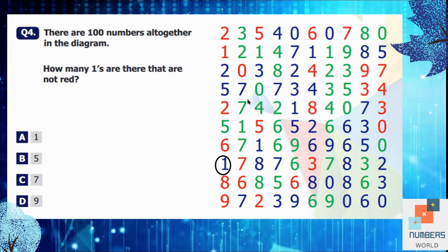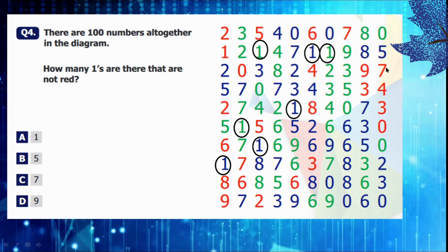Then in the second column, another one is found. So we will circle it. Then in the third column, we have another one. And this one will be counted as well. Then I can see two more ones. And in the other columns, there is no one. So that's why we are going to count the number of the circles. 1, 2, 3, 4, 5, 6, 7.